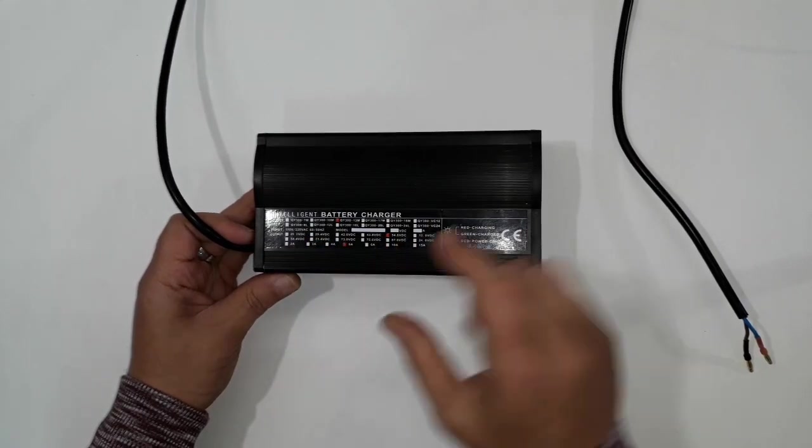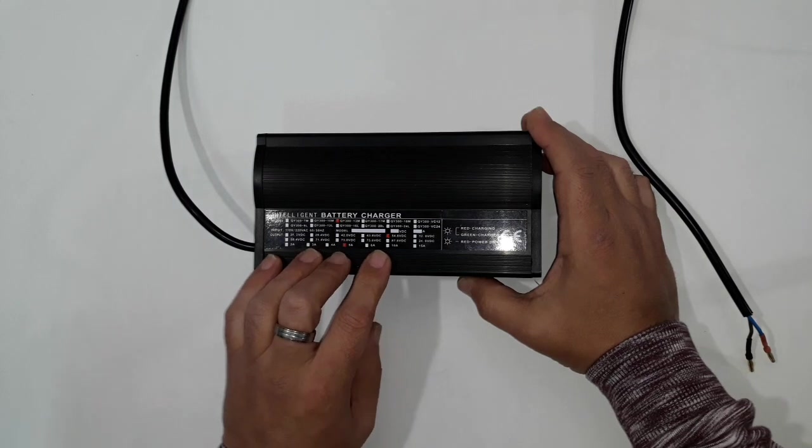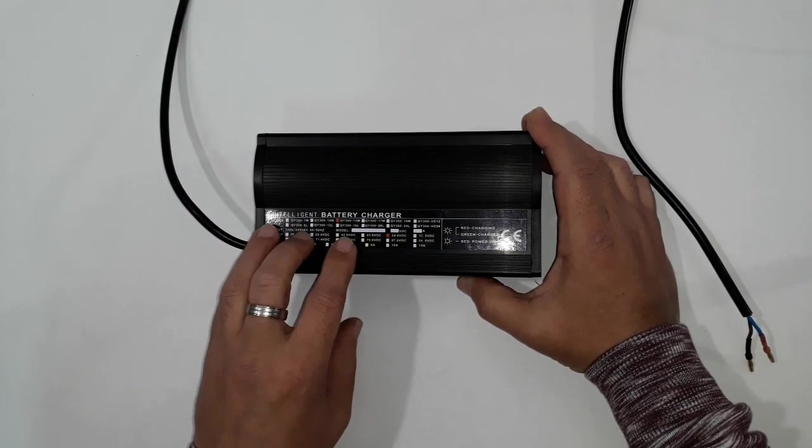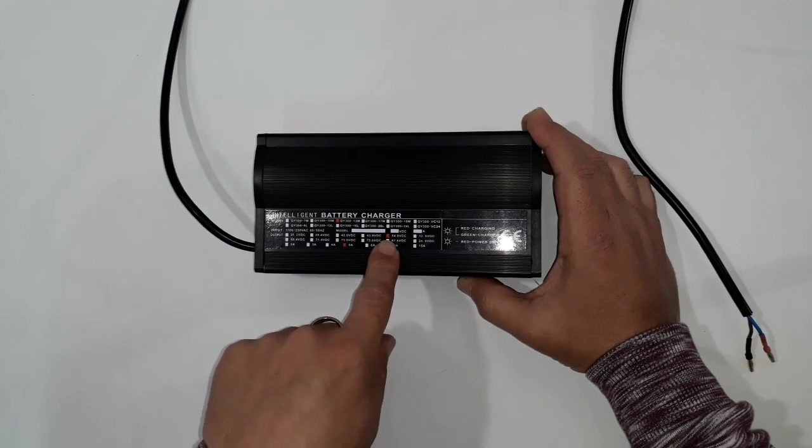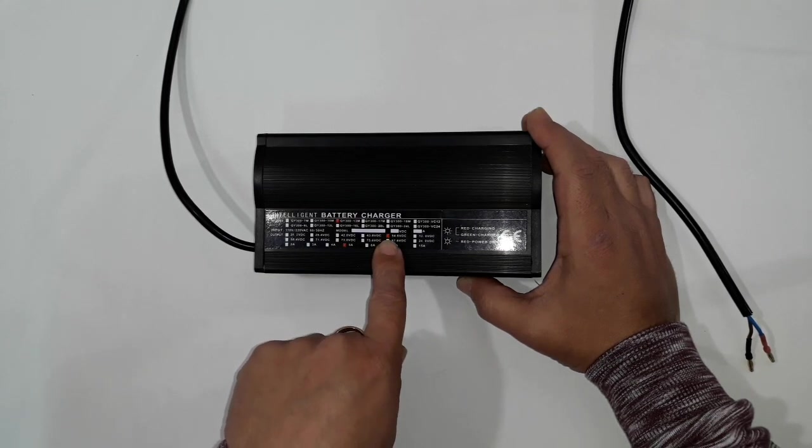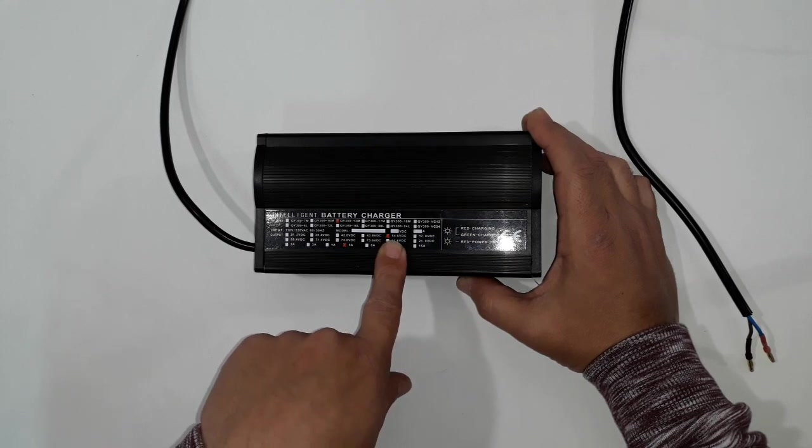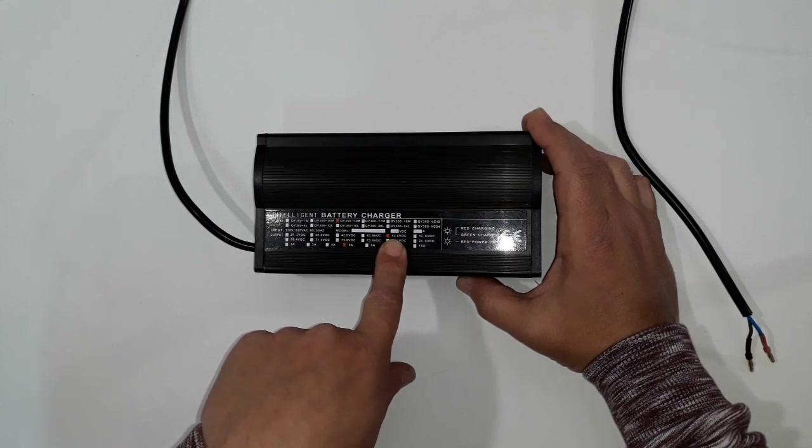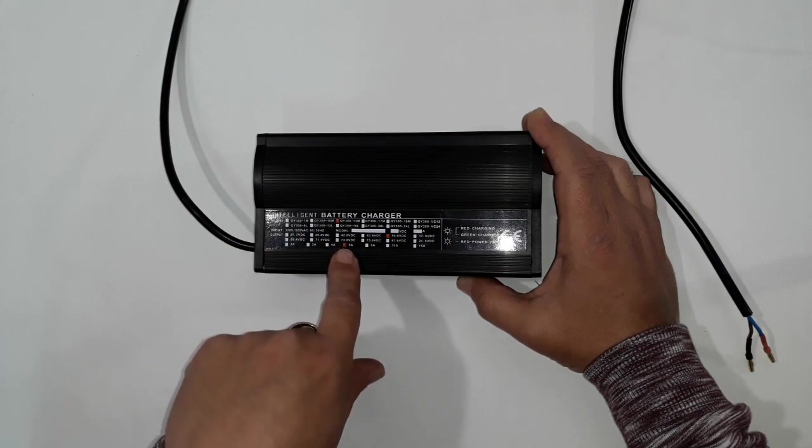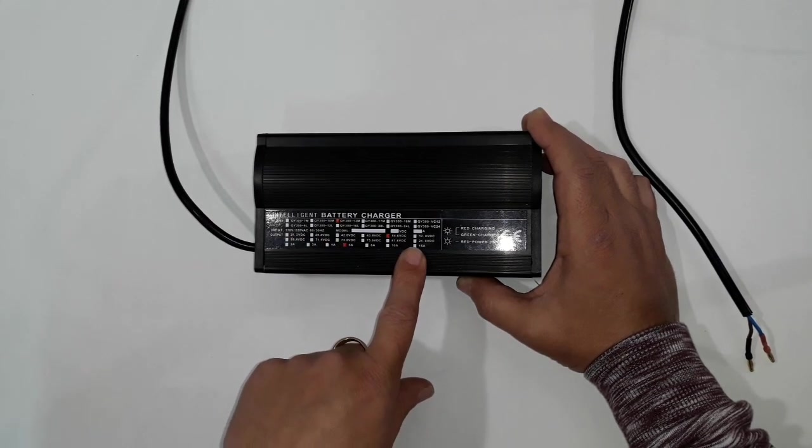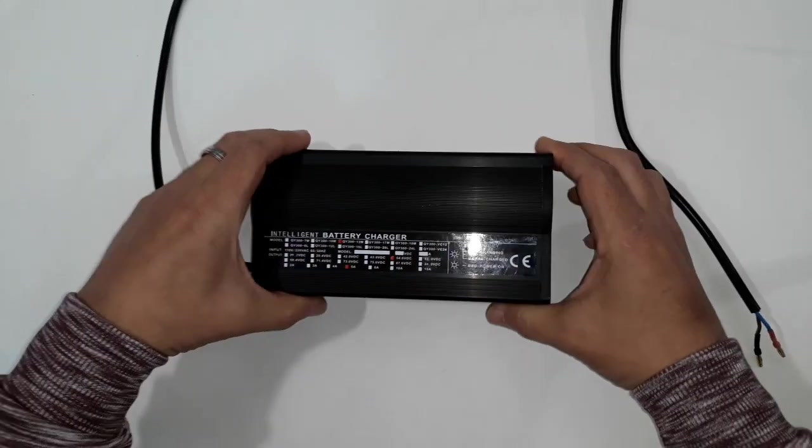So what we're going to do is open it and see how we can modify from one level to another in order to accommodate a different battery than it was supposed to work with. This one was supposed to work with 13 cells in series of lithium power, which is a maximum voltage of 54.6 volts, and it's got a power of 5 amps.